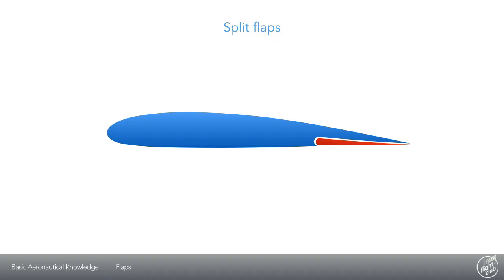Some other flap designs found on light aircraft are split flaps. These are hinged below the wings. When extended, they increase lift but also cause a lot of drag when compared to the plain flap design. The drag is due to the extra disturbance of the airflow around the wings.